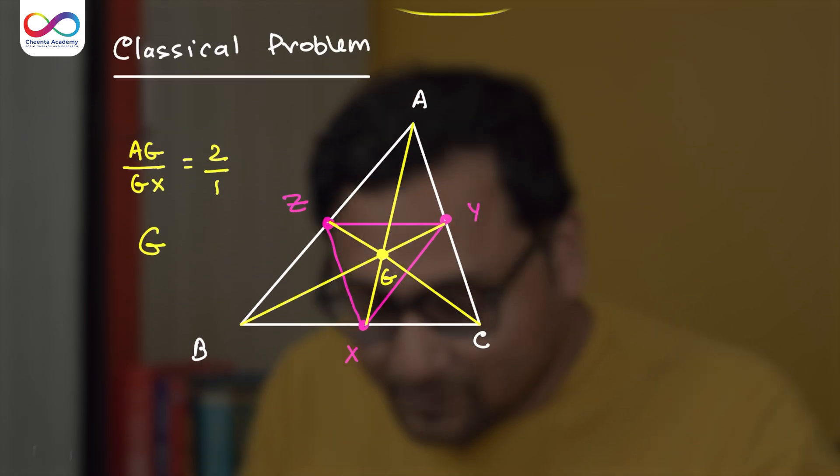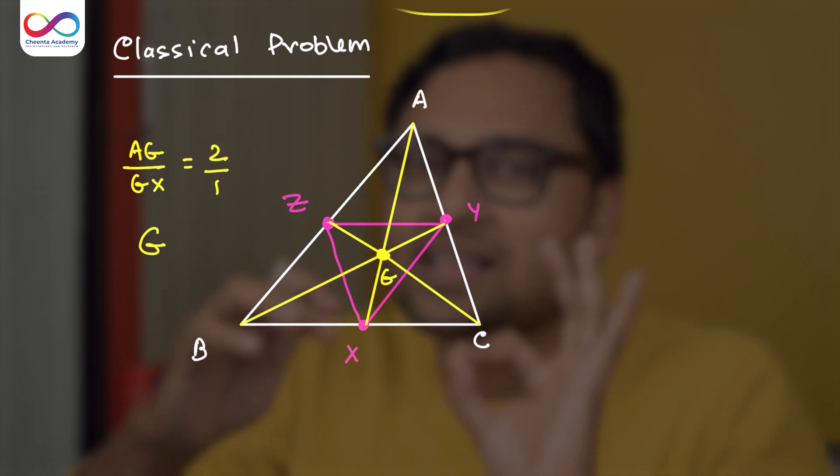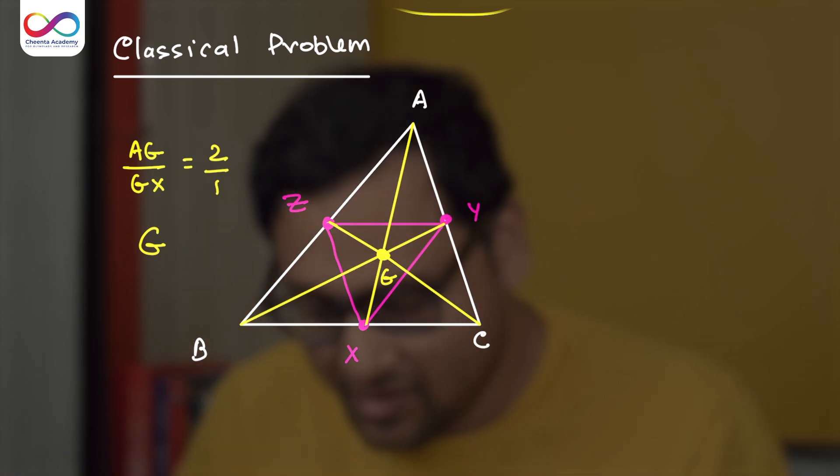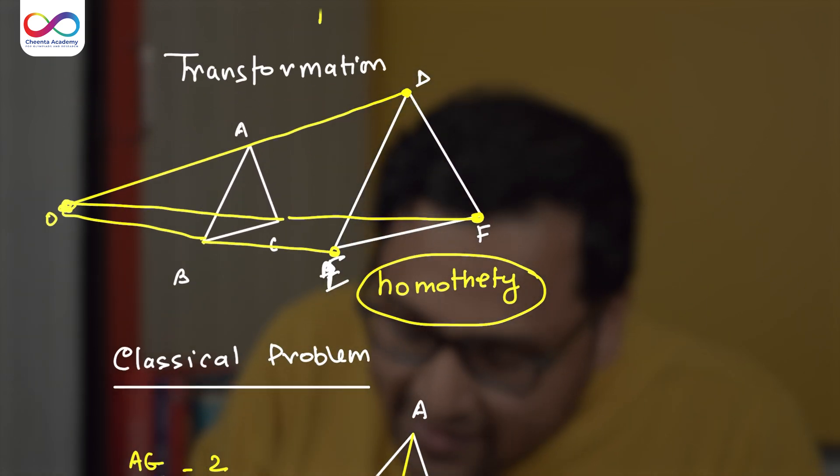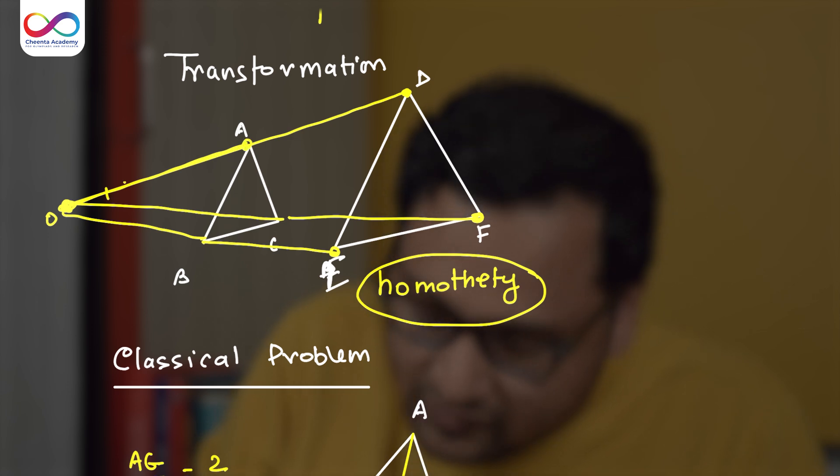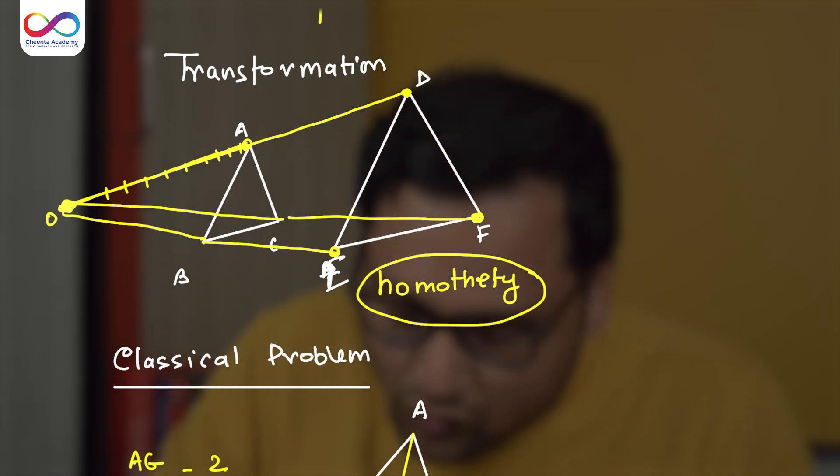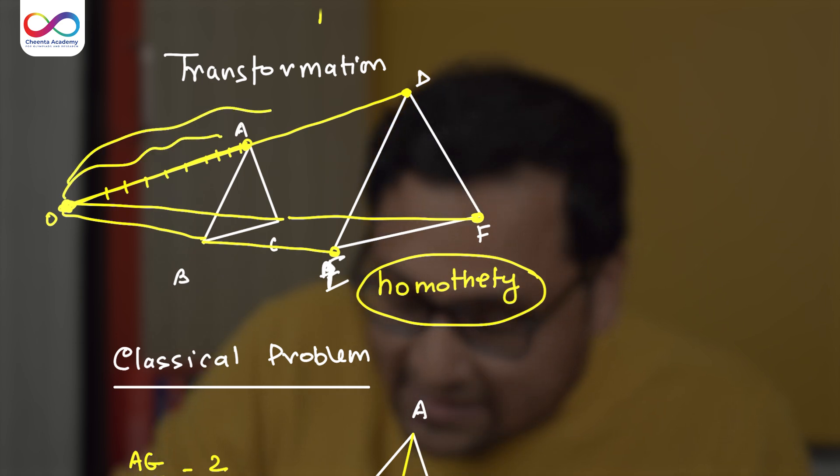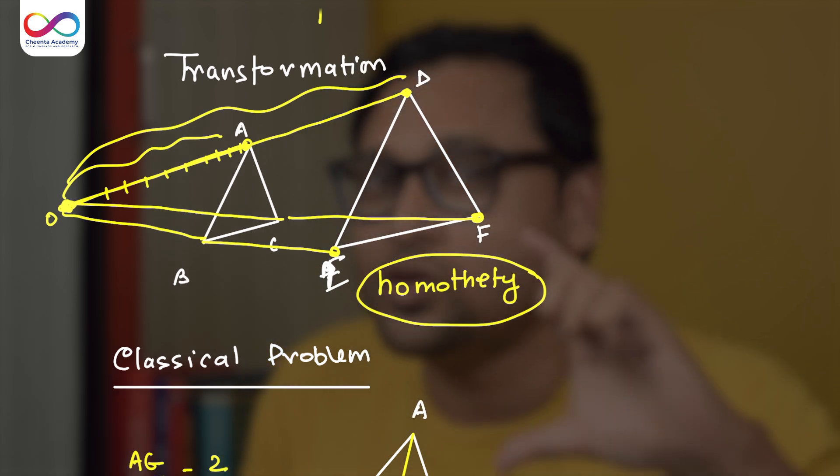But here, the center of homothety is G. So we are blowing up things about G with respect to G. G is the place where our eyes are. And the ratio is minus half. What is that? Let me explain. So if OA is the original length and the ratio of homothety in this particular picture is probably 2 because OA is doubled. So OA has become OD. It has doubled. That ratio is called the ratio of homothety.